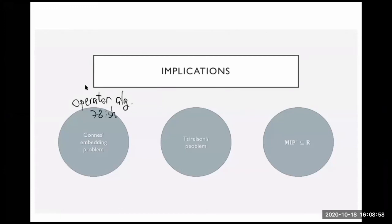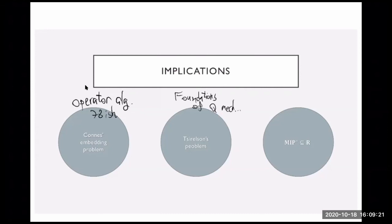The second problem is Tsirelson's problem, from the early nineties. This is a problem in foundations of quantum mechanics — a fancy way of saying: what is the correct mathematical model that explains certain quantum mechanical phenomena? There are several models and the question is what are the differences between the models mathematically.